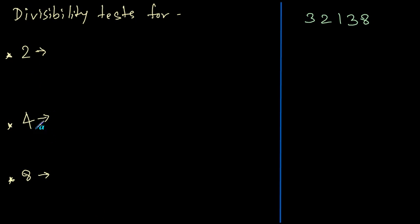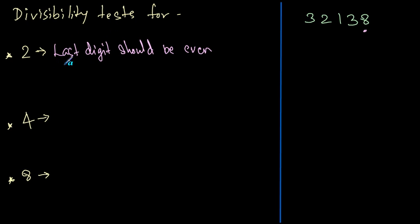These numbers are grouped together because the conditions are quite similar. Let's start off with 2. The dividend here is 32138, and these are the divisors. The divisibility test for 2 says that the last digit of the number should be an even number — the last digit is always the units digit. Since 8 is an even number, this number is divisible by 2.